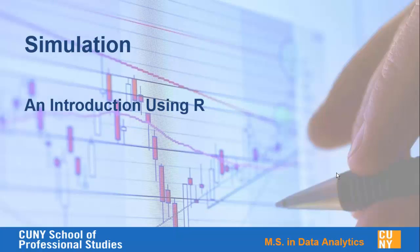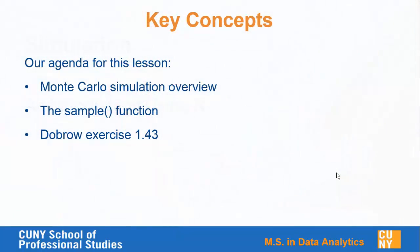Let's take a look at simulation, and we'll use R as our tool. Dubrow covers simulation just a little bit at the end of chapter 1 and at the end of a lot of chapters in the book. So in this chapter, our key concepts will be Monte Carlo simulation — just what it is and what the steps are. We'll take a brief look at the sample function, which is a pretty commonly used function for random sampling. And then we'll work through exercise 1.43 together.